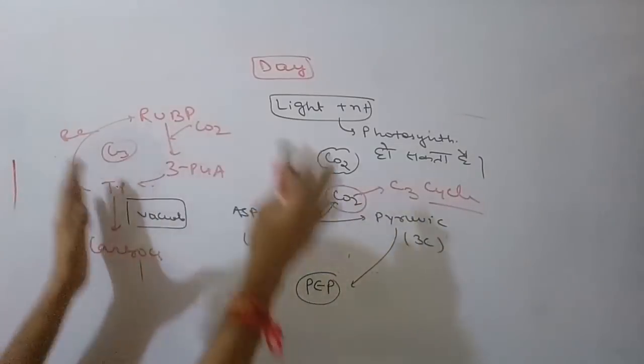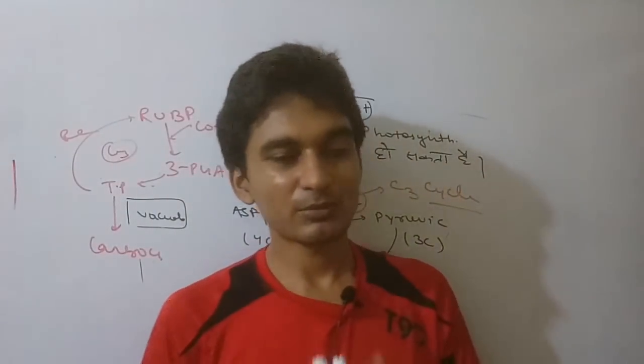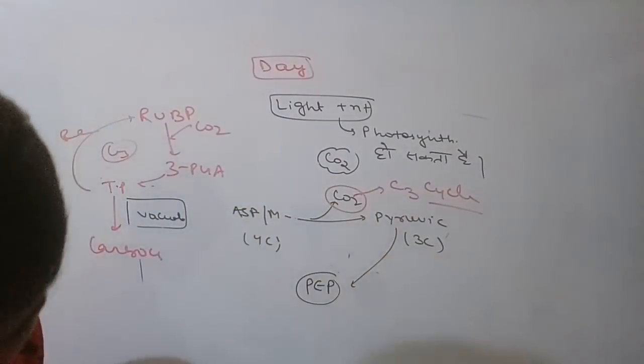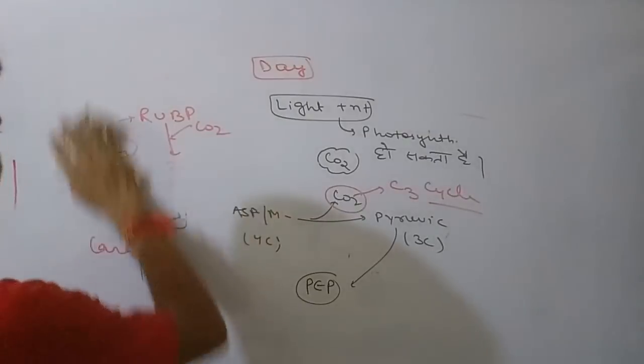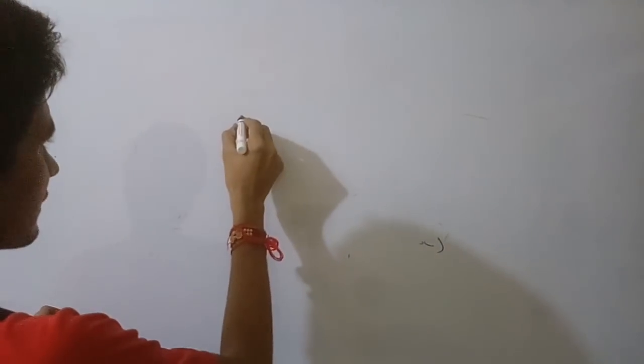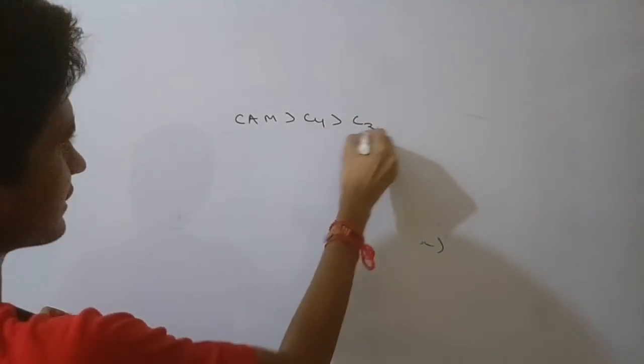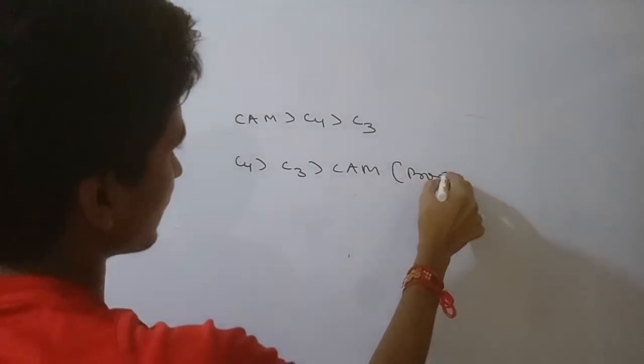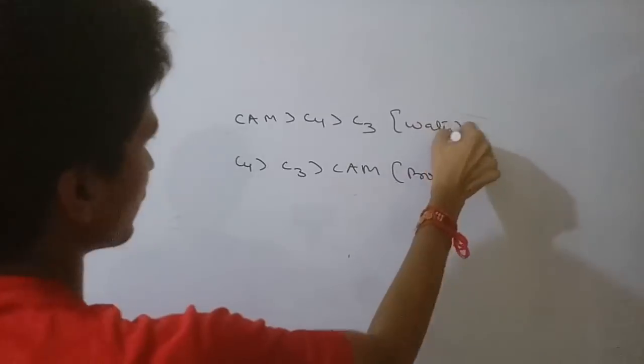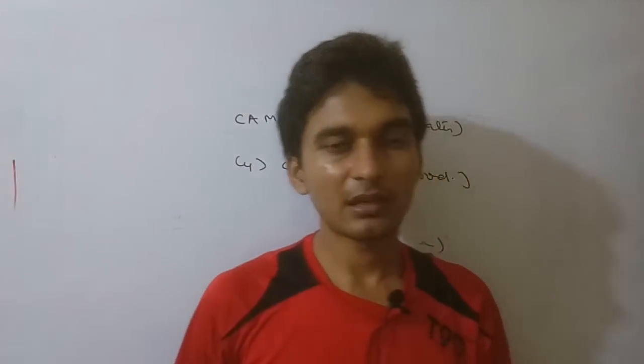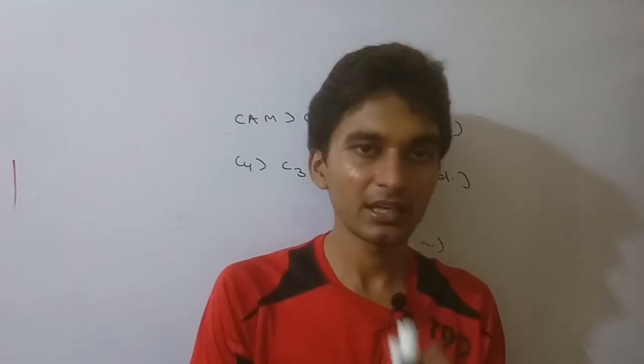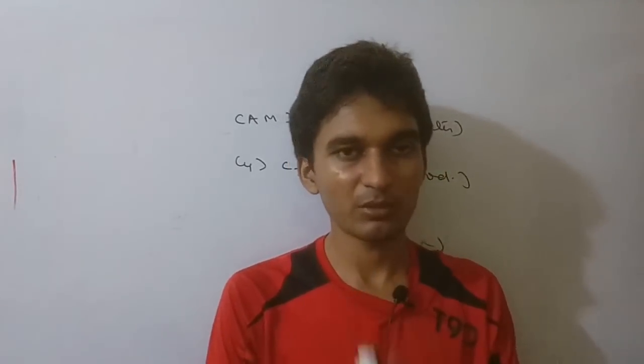This is an important pathway for conservation of water. CAM plants have highest water conservation efficiency. Questions comparing C3, C4 and CAM plants about water conservation and productivity appear in exams. I will cover factors affecting photosynthesis in the next video. Thanks for watching, please subscribe and share.